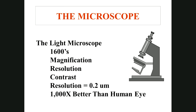Contrast is how the specimen stands out against the background. With a microscope you control the amount of light — too much floods out what you're looking at, too little is too dark — so you adjust contrast until the colors are nice and crisp. The resolution of the light microscope is 0.2 micrometers, a thousand times better than the human eye.